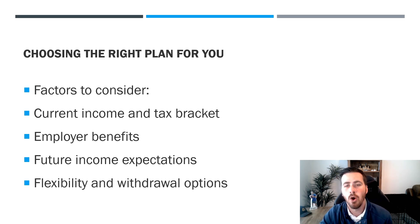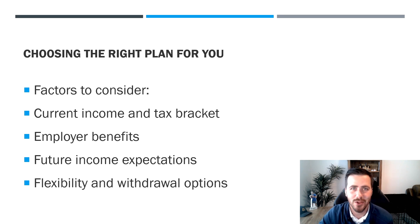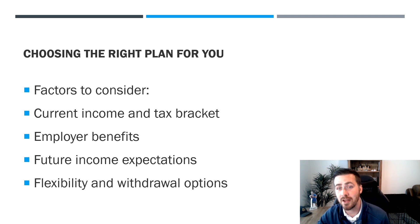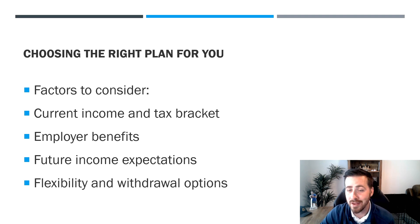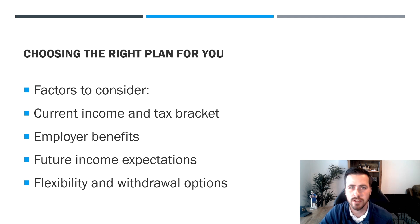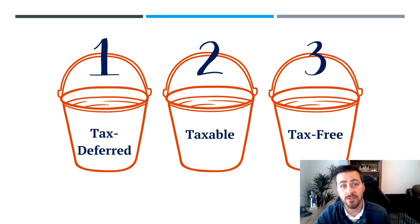A big question I always get asked is: what's better, a traditional IRA or a Roth IRA? There's no single correct answer. Tax brackets could be higher in the future, so taking a deduction now may make more sense if you'll have less income later. But if tax brackets are higher down the road, maybe you do the Roth. The biggest things to look at are your current income and tax bracket, your employer benefits, future income expectations, and flexibility of withdrawal options. My rule of thumb is it's good to have both.